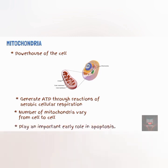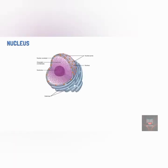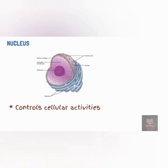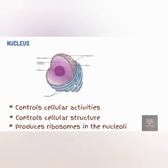The nucleus is a spherical structure that is usually the most prominent feature of a cell. Most cells have a single nucleus, although some, such as mature red blood cells, usually have none. Skeletal muscle cells and a few other types of cells may have multiple nuclei. The nucleus contains genetic material and directs the activities of the cell. It also dictates the type of proteins and structures produced by a particular cell, and it is the site of ribosome production and plays a role in cell division.